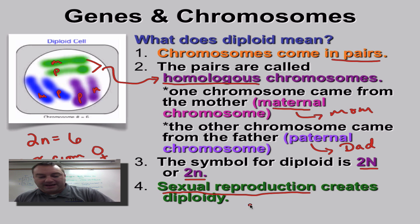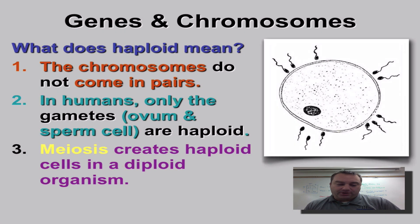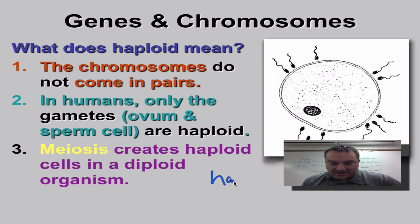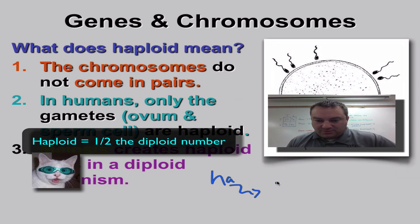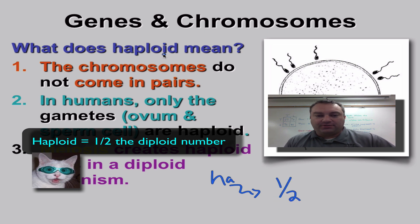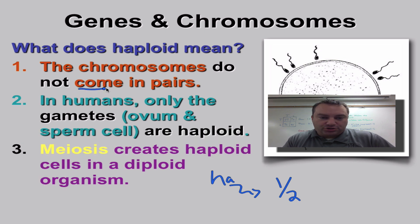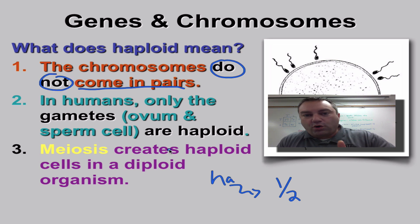Now let's move on to haploid. Haploid basically means half — think of the 'ha' in haploid as meaning one half. So you have half the number of chromosomes. Think of 'ploid' as referring to chromosomes. Basically, chromosomes do NOT come in pairs — you only have one of each kind.